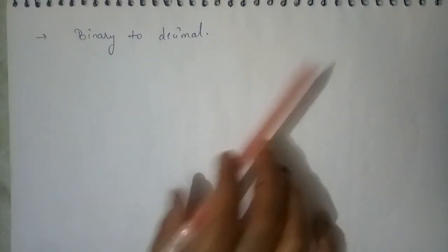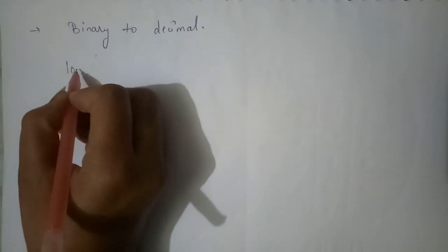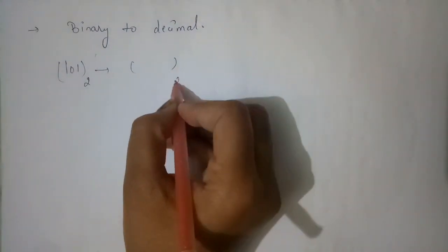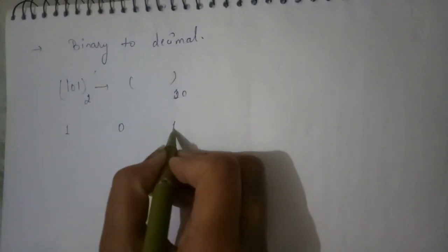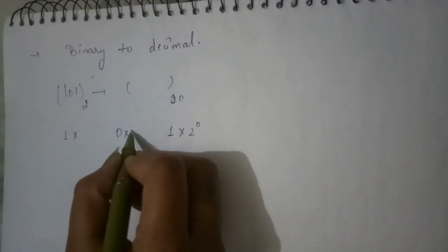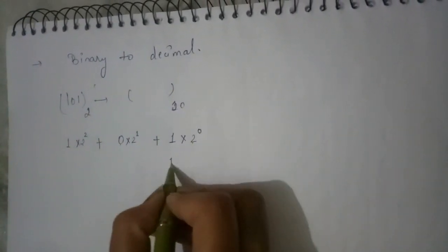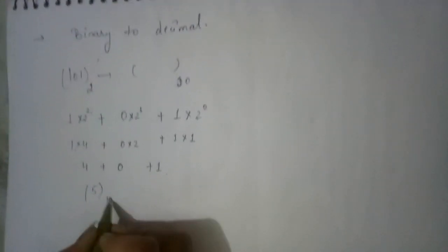Now let's learn how to convert binary to decimal. Take the example of 0101. First, write down all the digits of the binary number and multiply each by 2 to the power in reverse order — starting from 2 to the power 0 on the right. So: 1 × 2⁰ = 1, 0 × 2¹ = 0, 1 × 2² = 4. Adding these: 4 + 0 + 1 = 5. So 101 in binary equals 5 in decimal.